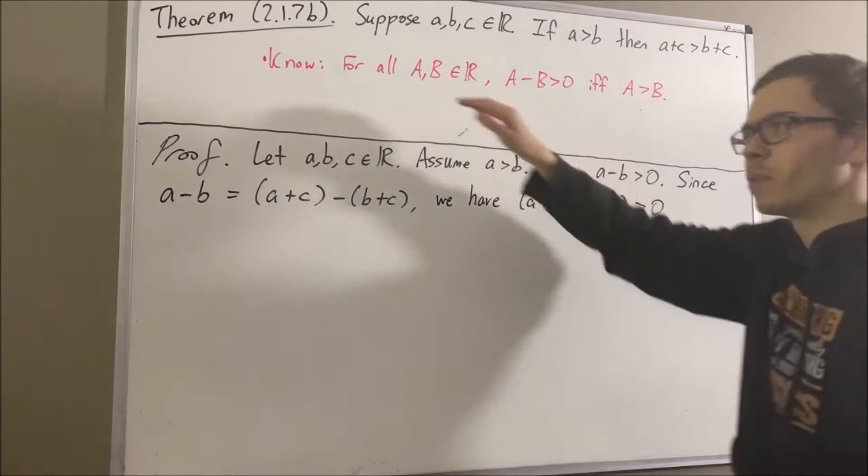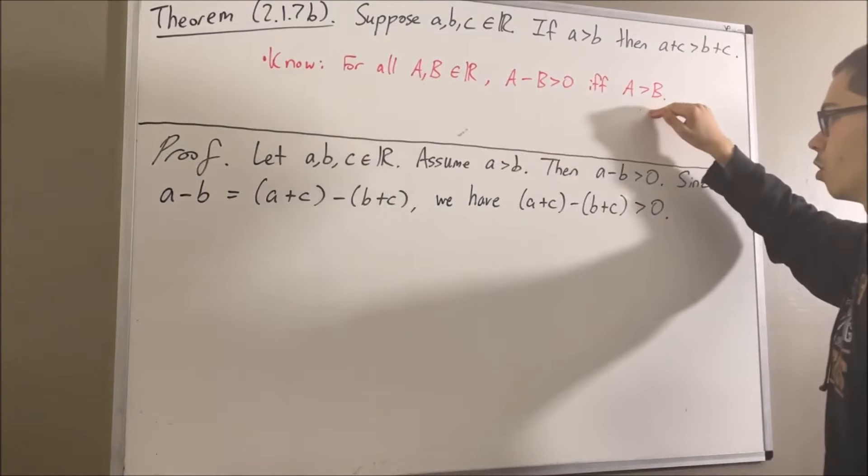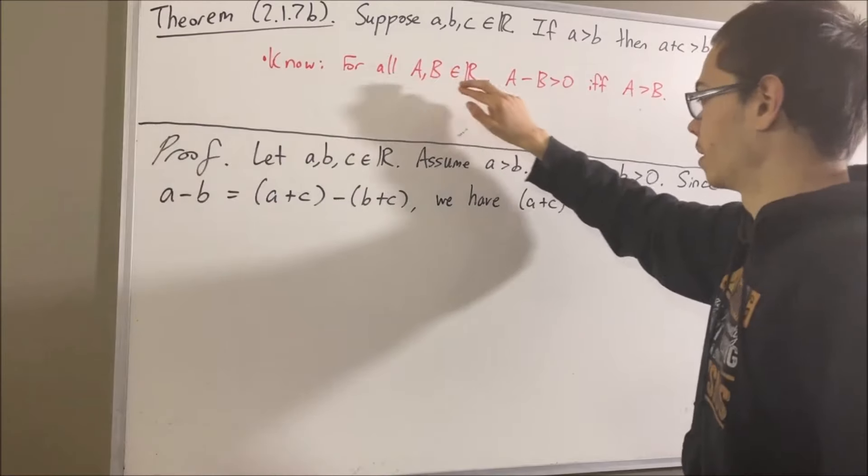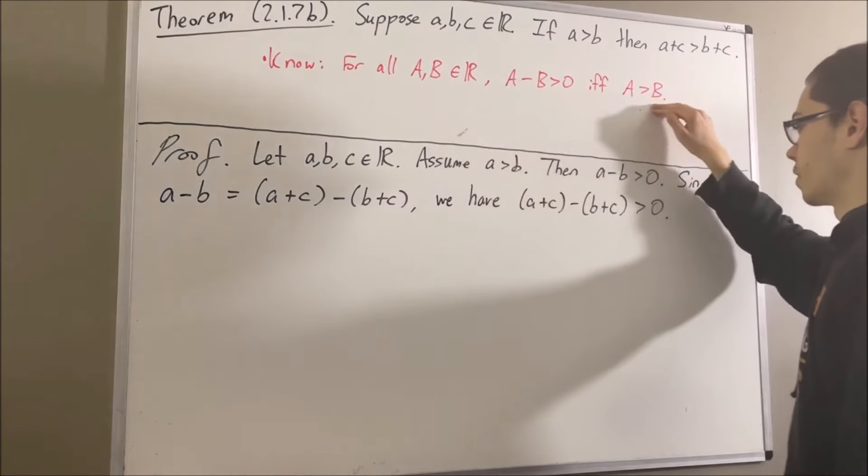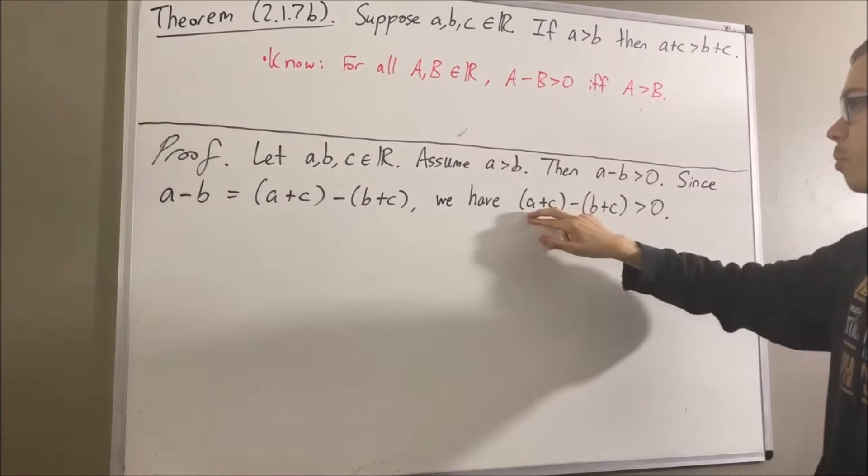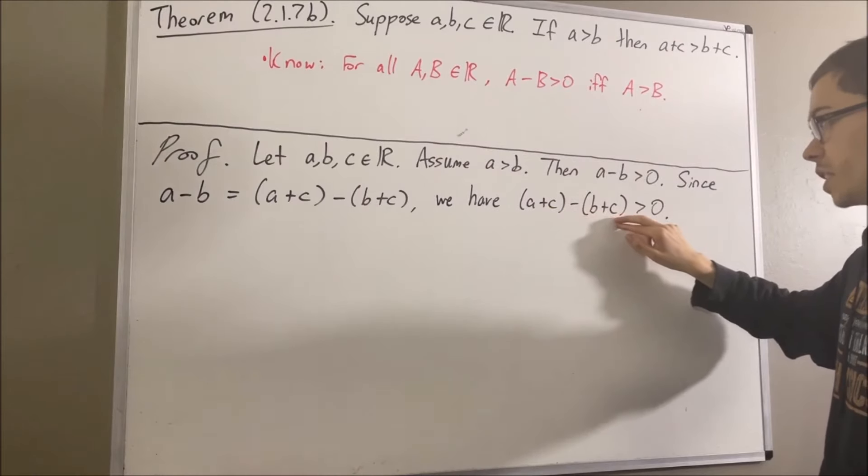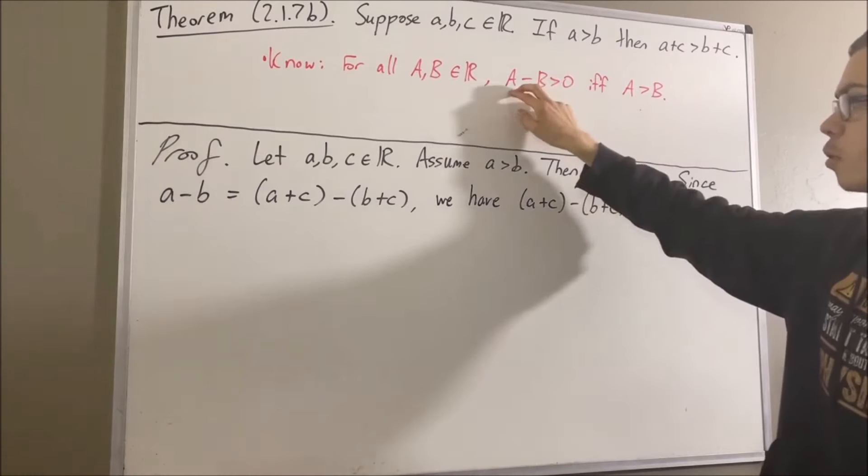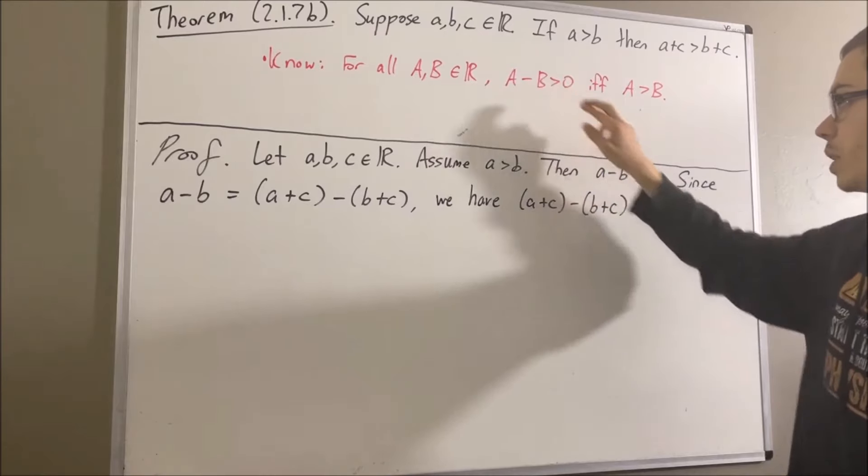But again, if we go back to the fact that we have here, we know that for any two real numbers A and B, this is true if and only if this is true. Well, A plus C is a real number, and B plus C is a real number. So we can treat capital A as A plus C, and capital B as B plus C.